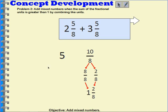So now I can just add my five ones and my one one together, and I would get six ones and two eighths. And that would be six and two eighths.